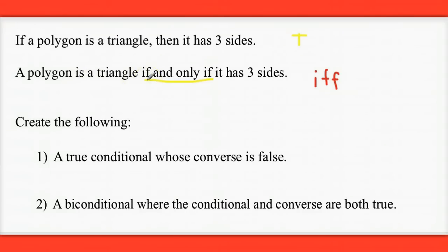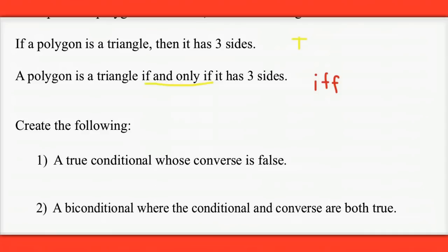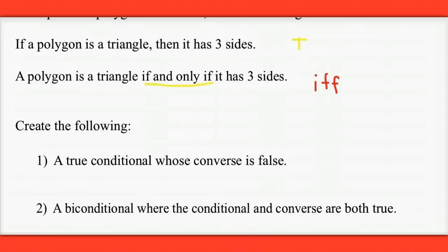A polygon is a triangle if and only if it has three sides. So for that, you might want to think of a definition. So take a look at that, and we will have you write those two statements as part of your survey using tinyurl.